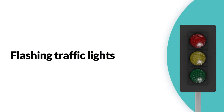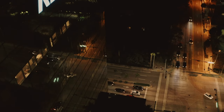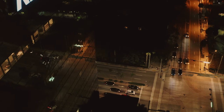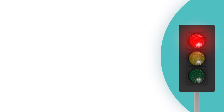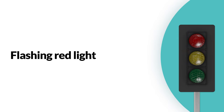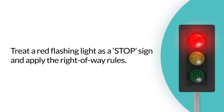Now on to flashing traffic lights. Flashing traffic signals are generally used to warn road users of dangerous intersections. There are only two types of flashing lights: the flashing red light and the flashing yellow light. A flashing red light is very simple — treat it as a stop sign and apply the right-of-way rules. That's all.